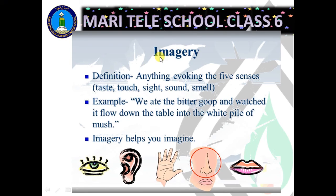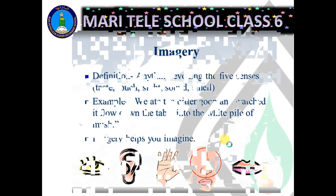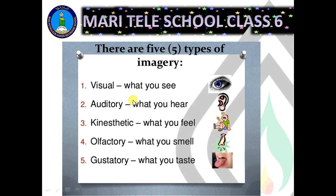Next is imagery. By definition it means anything evoking the five senses: taste, touch, sight, sound, and smell. A poet usually tries to create a picture or an image with the help of words. For example, 'we ate the bitter goop and watched it flow down the table into the white pile of mush'. There are different types of imagery: visual (what you see), auditory (what you hear), kinaesthetic (what you feel), olfactory (what you smell), and gustatory (what you taste).